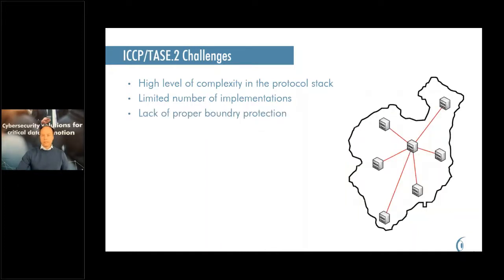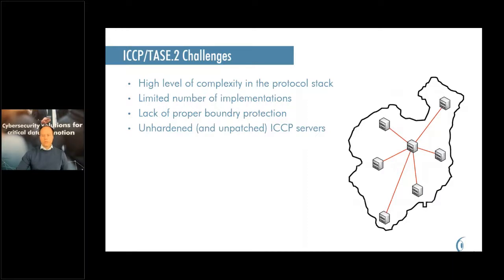There is also, in some cases, a lack of boundary protection between control centers. This is partly because this communication is usually not exposed to an open network but rather on dedicated links, and the organizations that run these control centers usually trust each other. They don't recognize that a breach somewhere in the network could spread to all sites without being slowed down or stopped by proper boundary protection. The ICCP servers are, like many other servers in OT, not properly hardened or patched. And the impact if these networks are affected by an outsider could be quite significant.